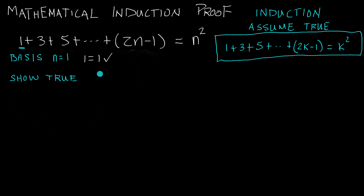If you think about this, we proved it was valid for the n equals 1 case — the most simple case. And then we're saying we can go up to any number we want. If we prove it's true for k plus 1, then we've proved it for the n equals 2 case.